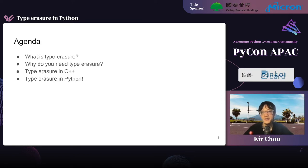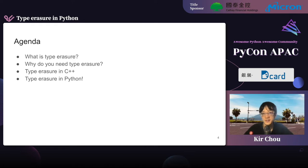My agenda contains the following things: what is type erasure, why do you need type erasure — those are the initial questions — and then I provide examples in C++ and Python.